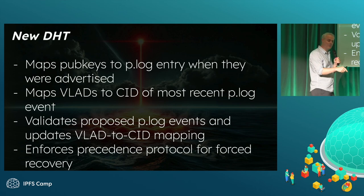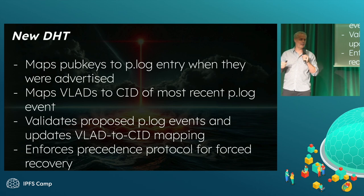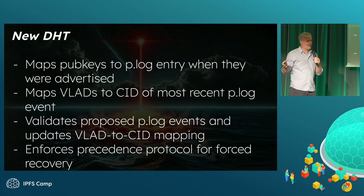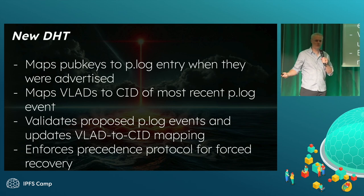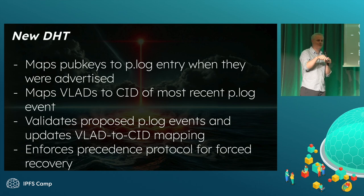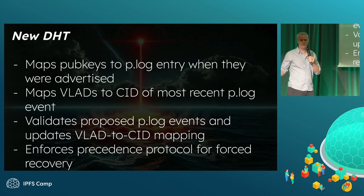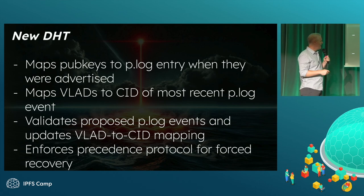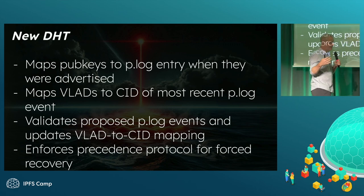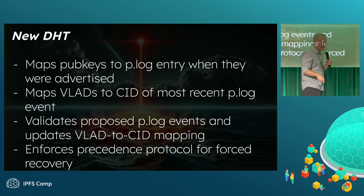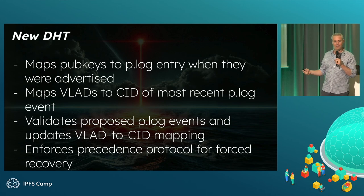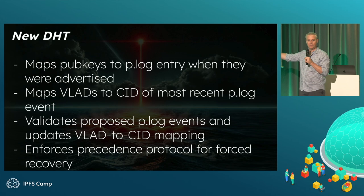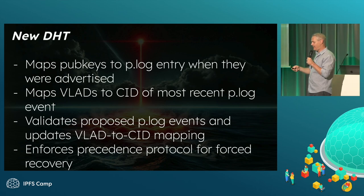This allows you to go from an old public key to my latest public key and convince yourself I was the author of those old commits or that old photo. In a world where we're digitally signing everything, you're going to have old data signed with old keys. If you don't have something like this, how do you know those old keys belong to the same person or controller as these new keys? The third thing the DHT does: when you submit an update to your provenance log, it runs the validation WASM scripts, and if it checks out, it updates the VLAD to point to the new event. This is also what enforces forced recovery — if someone steals my keys, I get my friends to do a threshold signature, and because mine has higher precedence, it replaces theirs.